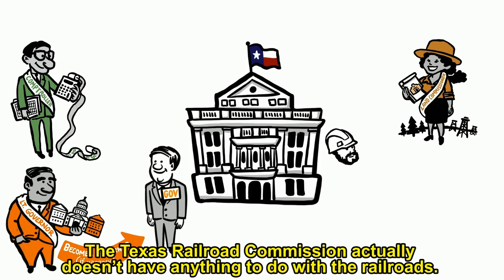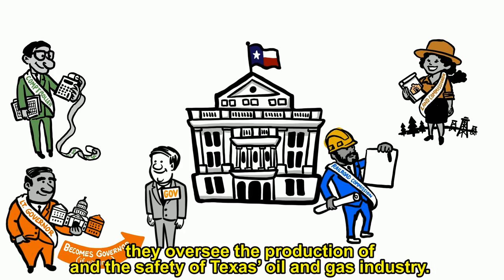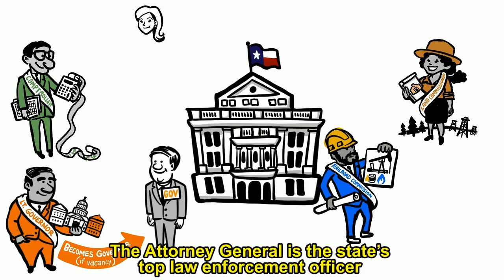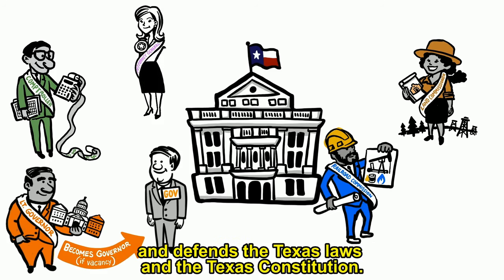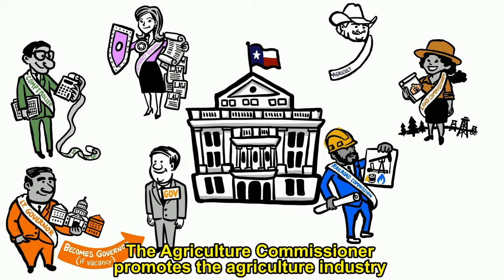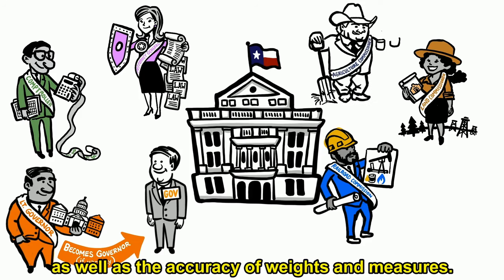The Texas Railroad Commission actually doesn't have anything to do with railroads — they oversee the production of, and the safety of, Texas' oil and gas industry. The Texas Attorney General is the state's top law enforcement officer and defends the Texas laws and the Texas Constitution.